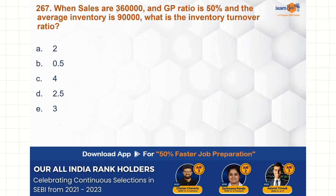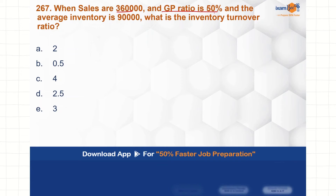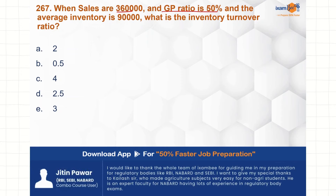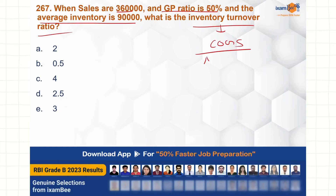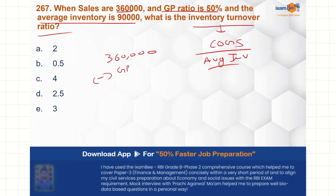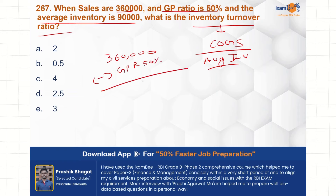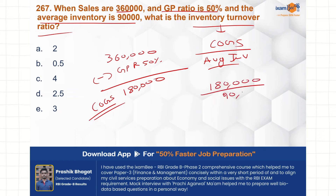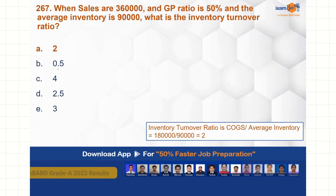When sales are 3,60,000 and the gross profit ratio is 50%, the GP is 1,80,000, so cost of goods sold is also 1,80,000. Average inventory is given directly as 90,000. Inventory turnover ratio equals cost of goods sold divided by average inventory — a common mistake is using sales instead. So 1,80,000 divided by 90,000 gives 2 times. Option A is correct.